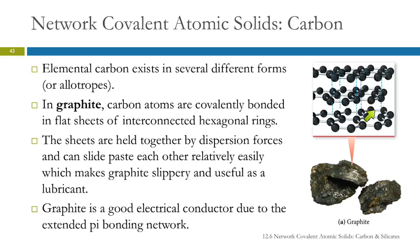These different layers slide easily, and that's what makes graphite slippery. We can use graphite as a lubricant because it slides on itself. It works well as pencil lead because as you move it across paper, it leaves bits behind. It's also a good conductor because there's an extended pi bonding network above and below the layer that allows electrons to move. Most nonmetals don't conduct electricity, but graphite does.